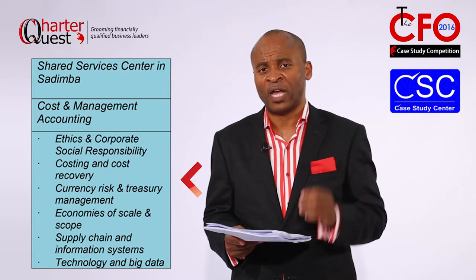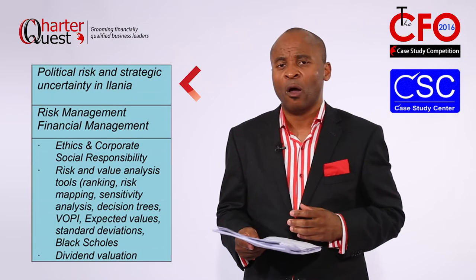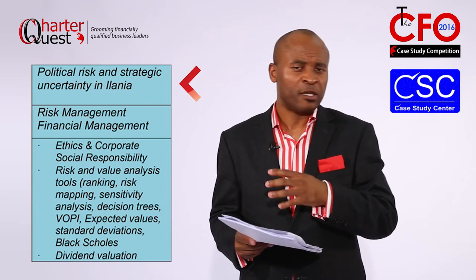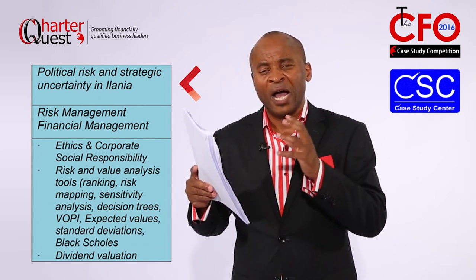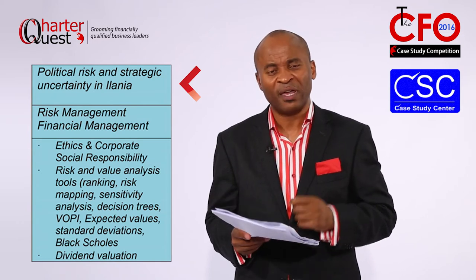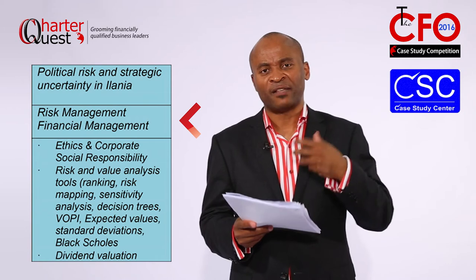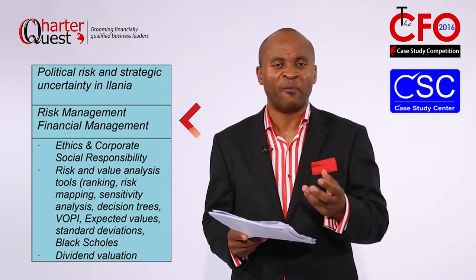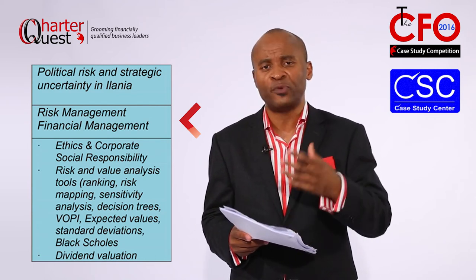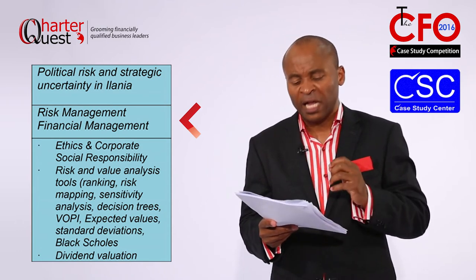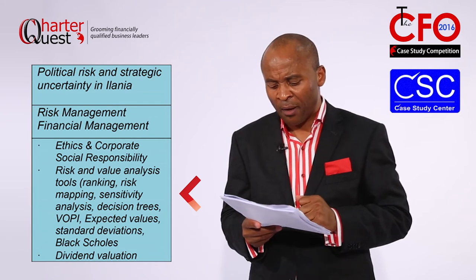The fourth issue is 'Political Risk and Strategic Uncertainty in a Key Market Called Elania.' Elania is one of the markets where Emcom actively operates in the Middle East, and it is caught up in serious political and strategic uncertainties that create major shareholder value challenges. The specific discipline areas you will need to draw from include risk management and financial management. Ethics and corporate social responsibility understanding will also be key to understanding the strategic context and challenge this business faces in this market.